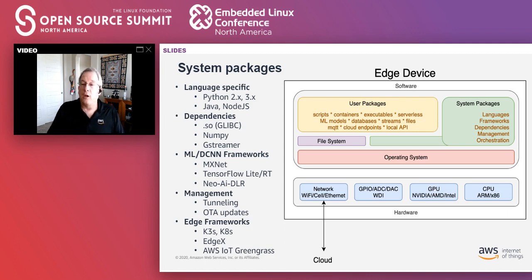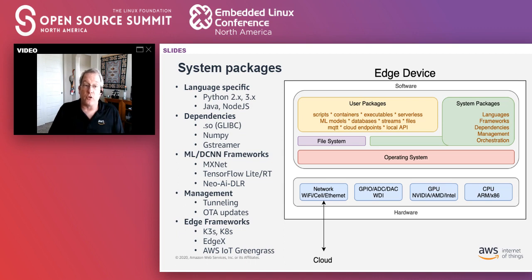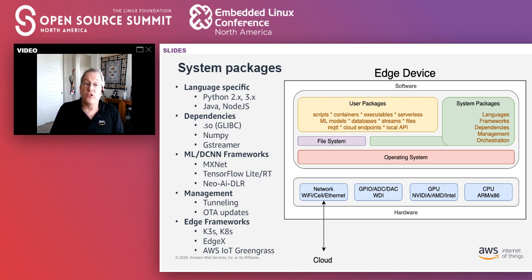Moving up from the OS and system packages — there'll be a variety of these. If you're running Python applications or Java apps, you'll need a Java runtime or Python interpreter. If it's compiled applications, you may need shared objects or certain versions of GLibC. You might want to take advantage of performant things like NumPy, written with underlying C runtimes available to other languages. For machine learning and deep convolutional neural networks, these might be full-blown frameworks like MXNet, Caffe, TensorFlow, or ones refined for constrained environments such as TensorFlow Lite or the Neo deep learning runtime environment.